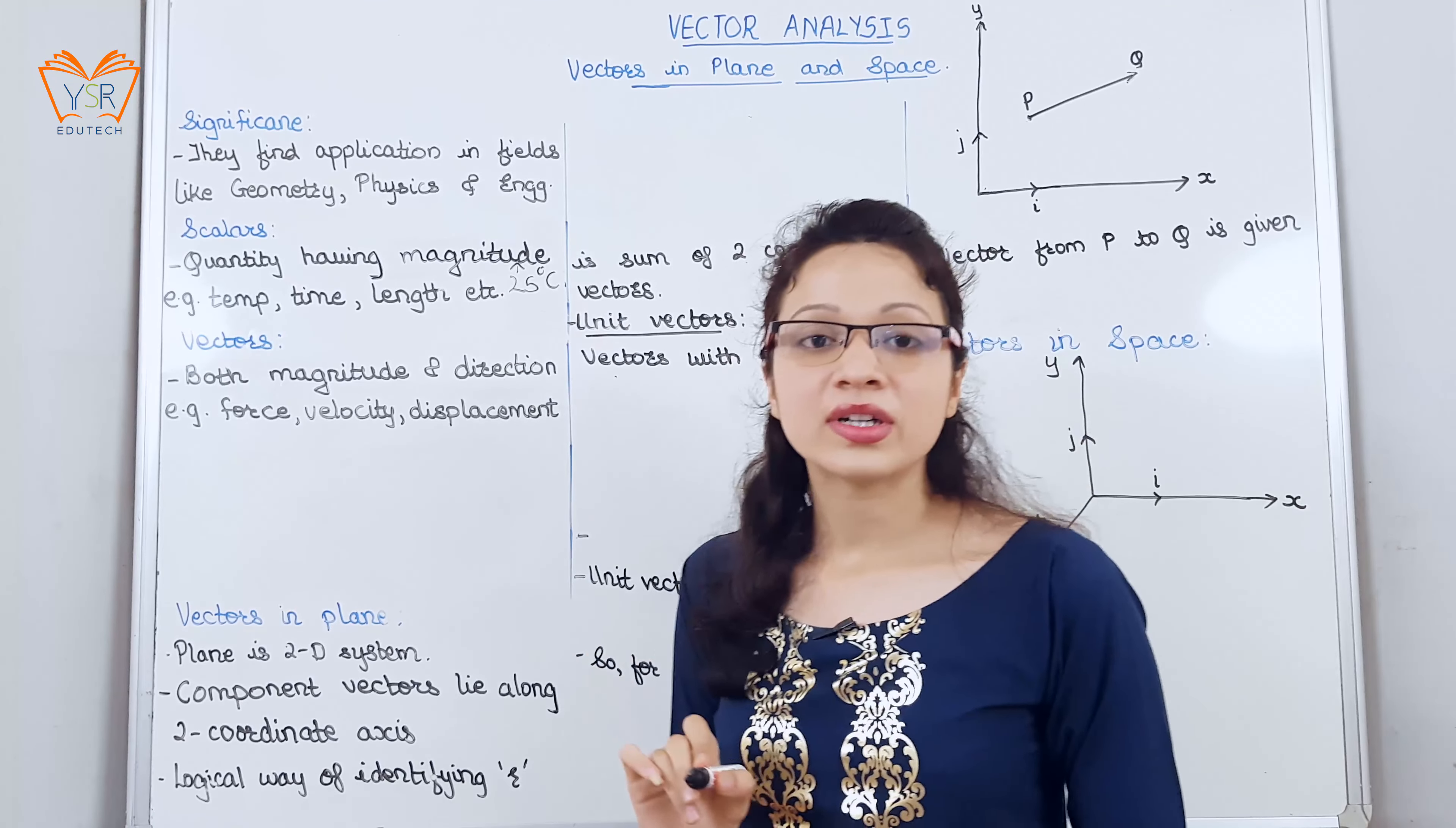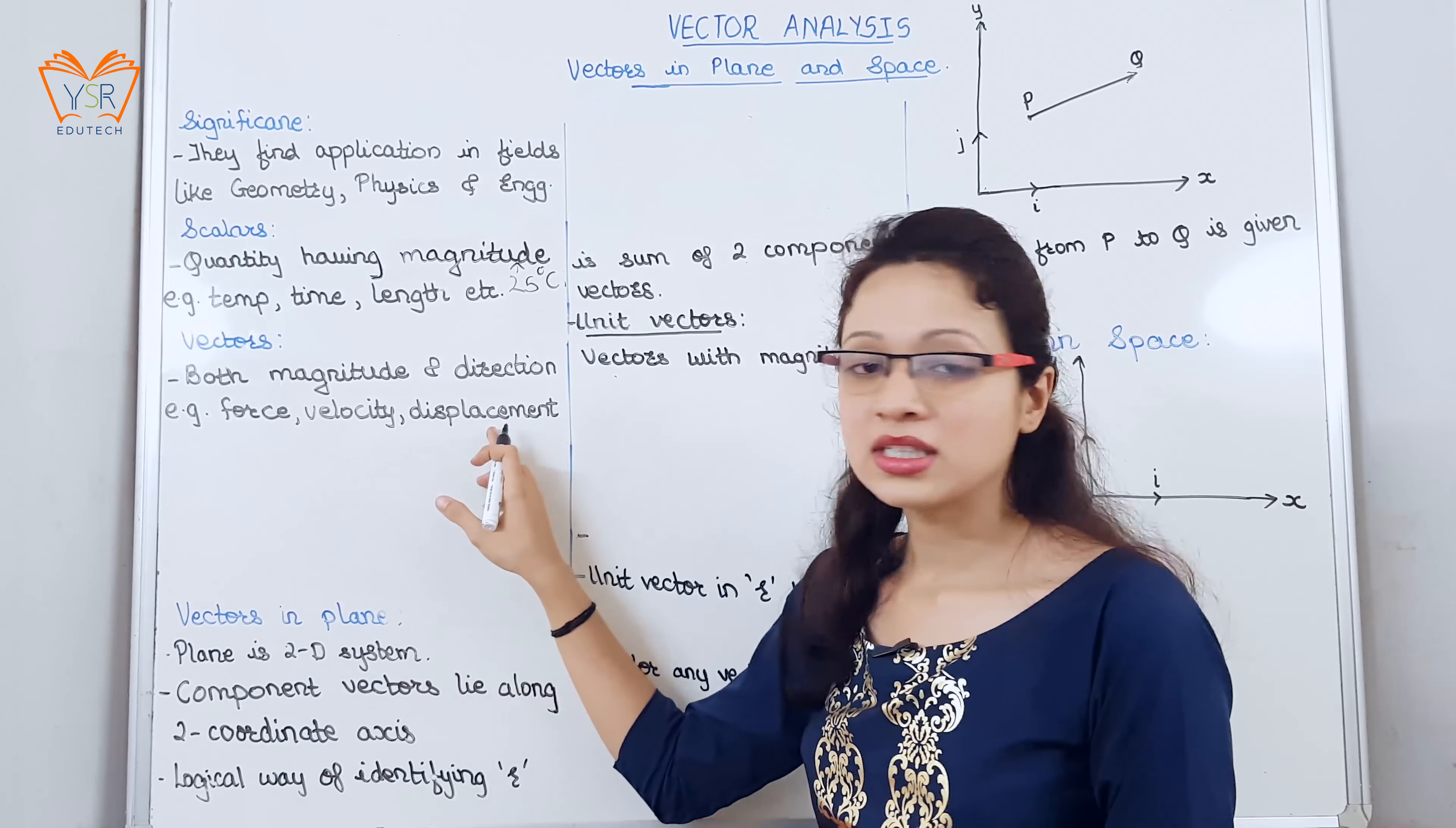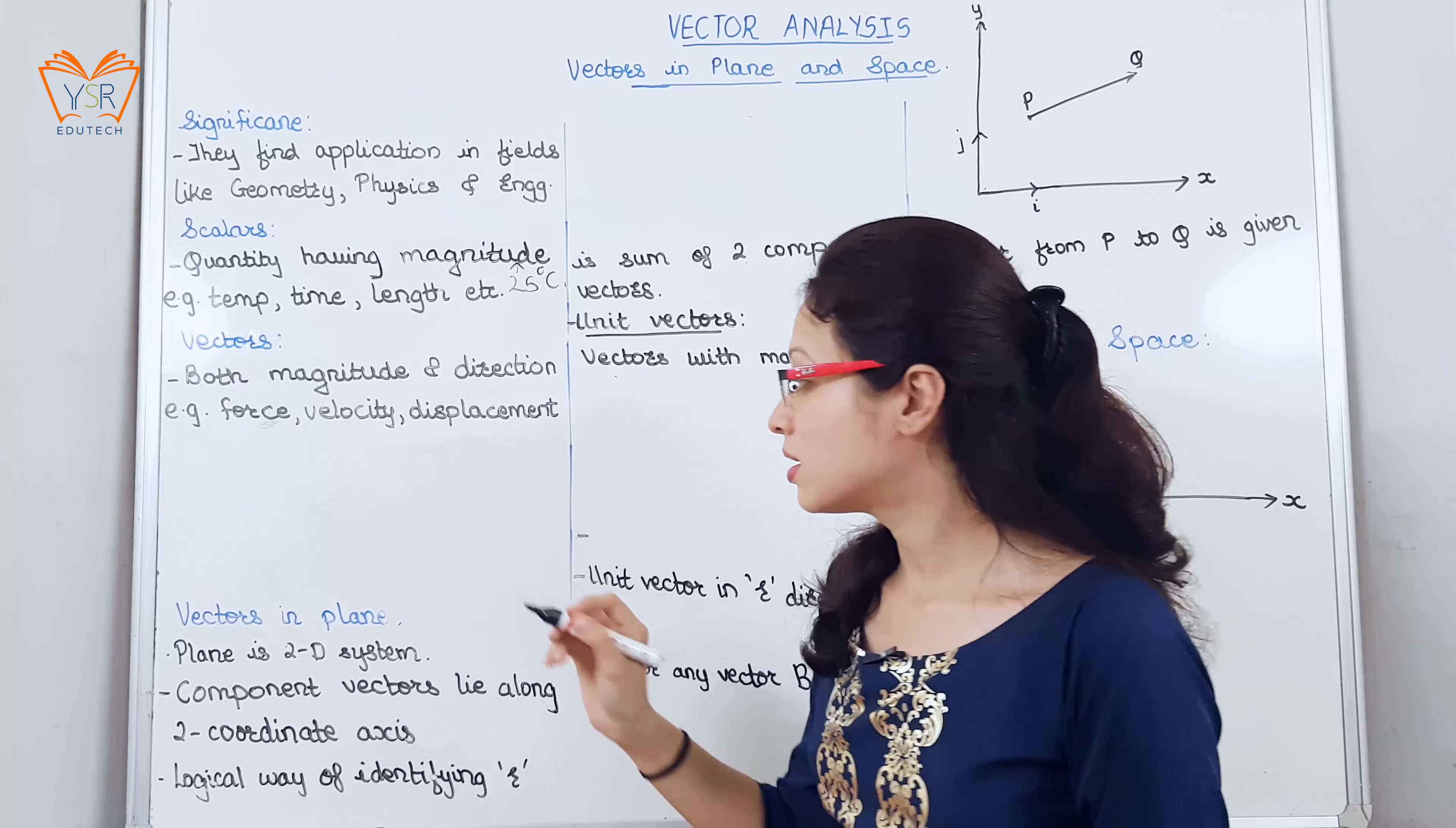Now vectors. Vectors are any quantity that has both magnitude and direction. Example force, velocity and displacement. Force we can say force is exerted in specific direction. So that gives both magnitude and direction.